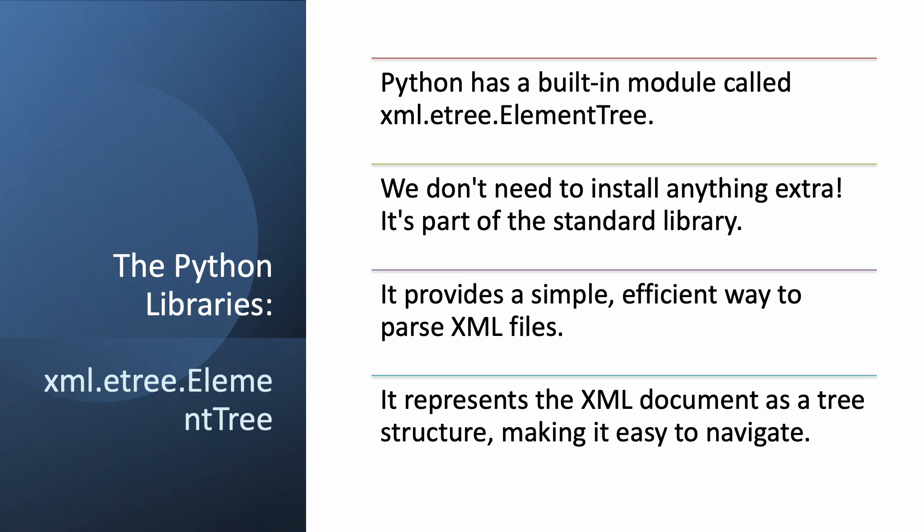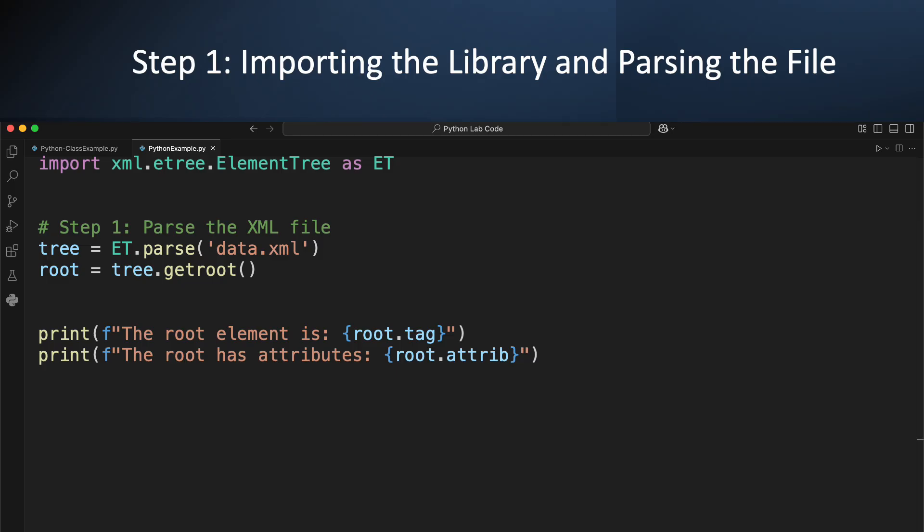All right, let's get to the good stuff. How do we actually do this in Python? The great news is we don't need to install any new libraries. Python comes with a powerful, built-in module called xml.etree.ElementTree. This module is designed specifically for working with XML data. It's simple, efficient, and best of all, you already have it. The name ElementTree is a big clue — it takes our XML file and turns it into a tree structure in our program's memory. The very first thing we do is import the library. We'll use the line: import xml.etree.ElementTree as ET. The "as ET" part is a common convention that just makes our code a little shorter and easier to read.